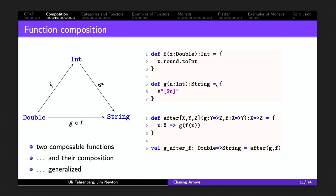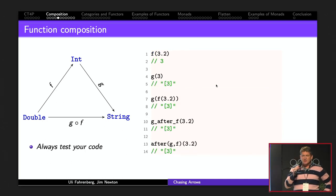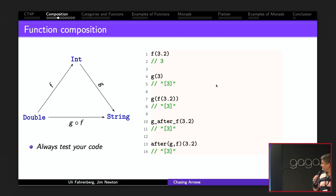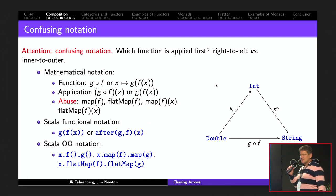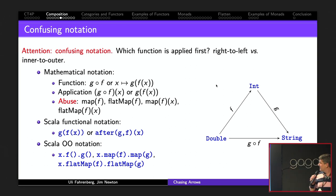In Scala we could write the function 'after' which takes g and f as parameters. A lot of the Scala code on the slides won't compile — it's only compilable by an idealized Scala compiler, partly so things fit on the slides. For example, f(3.2) returns integer 3, g(3) returns the string with brackets around the 3, and g(f(3.2)) equals after(g, f)(3.2) — they give the same value.